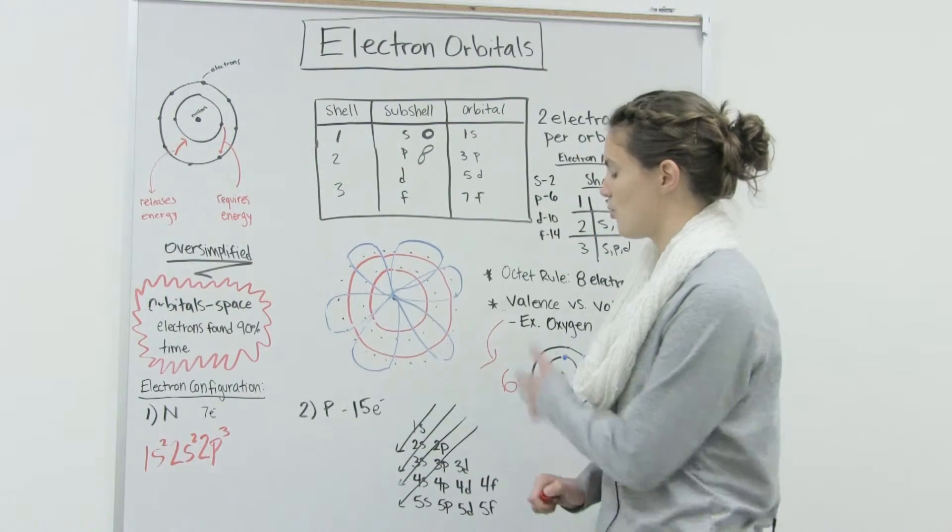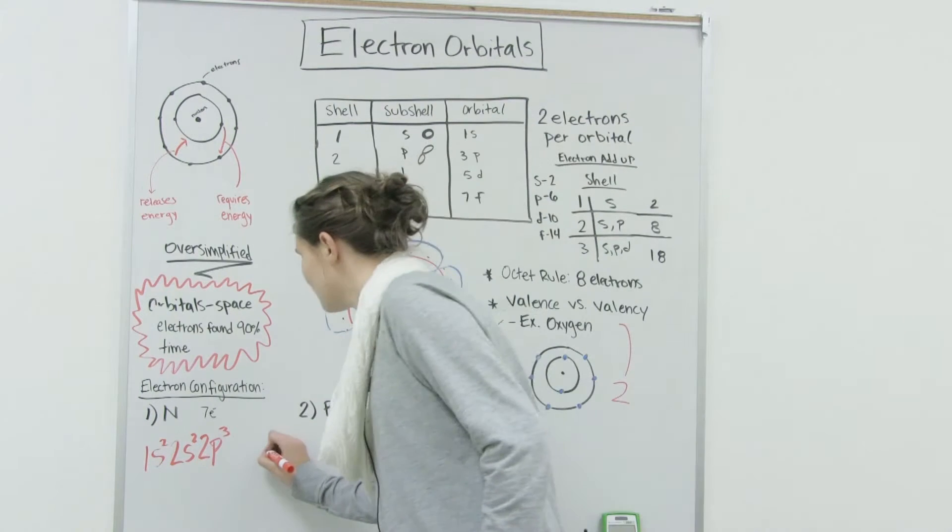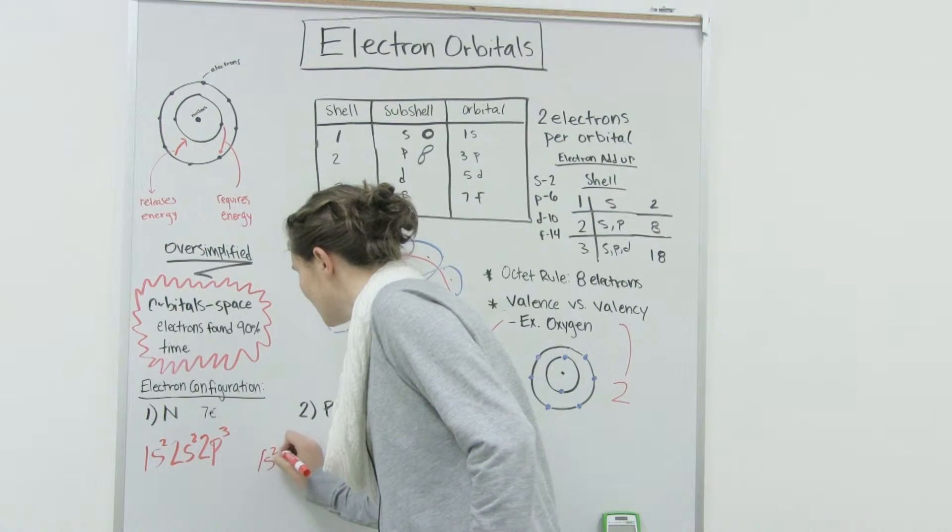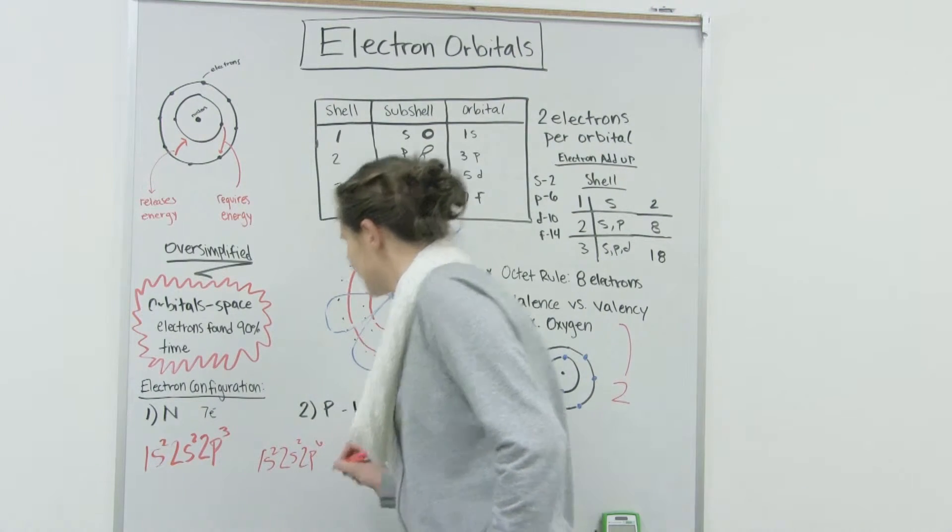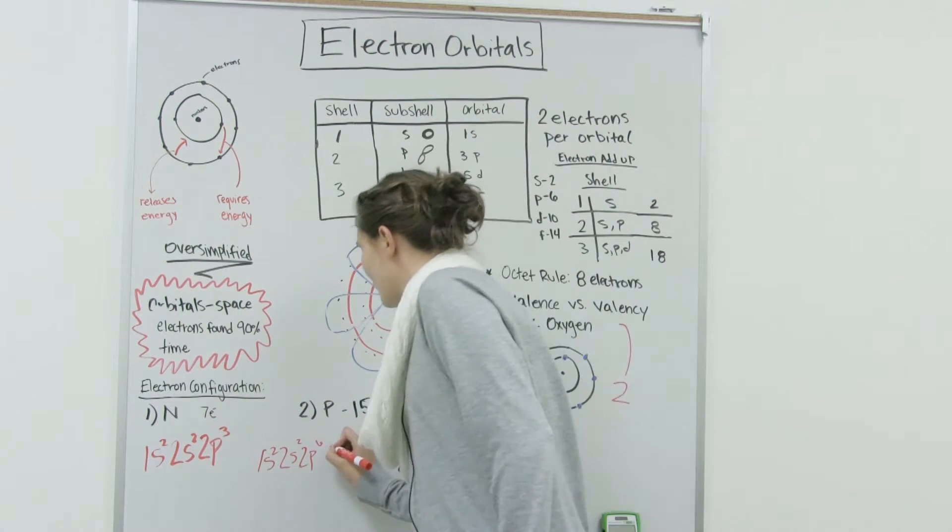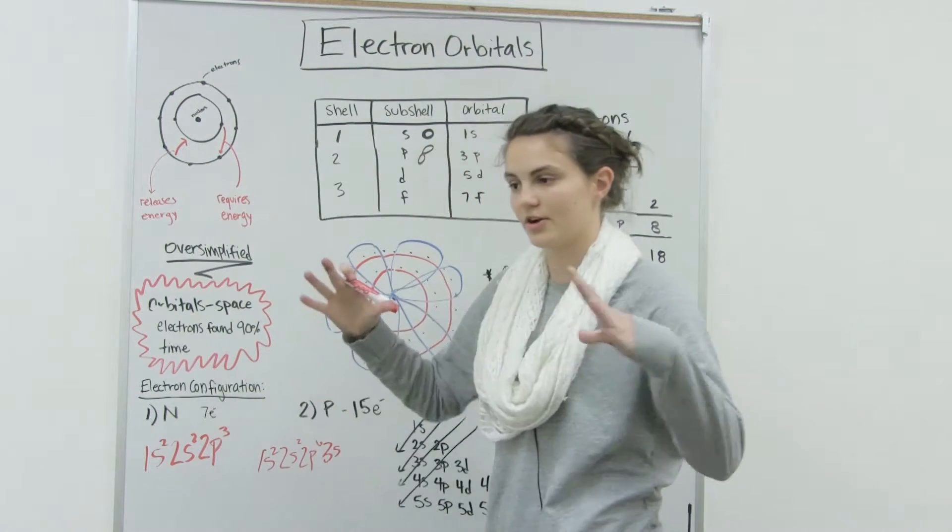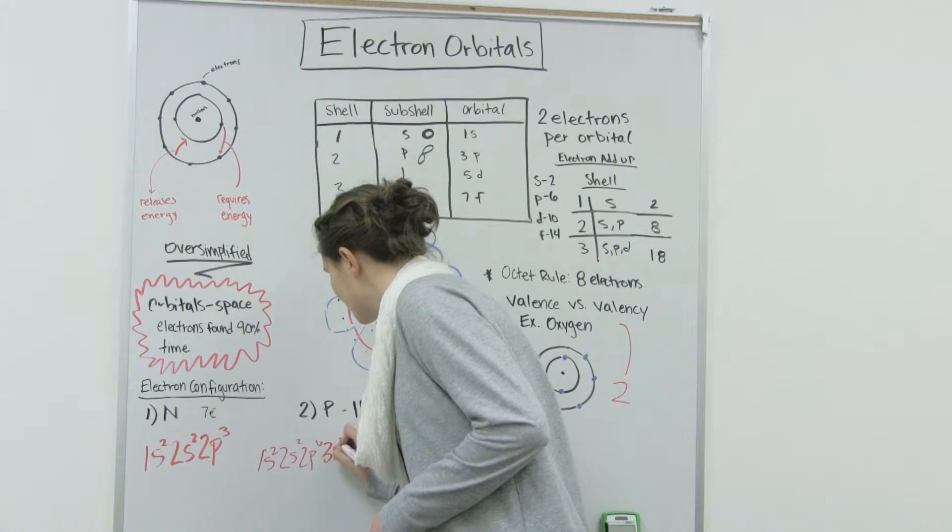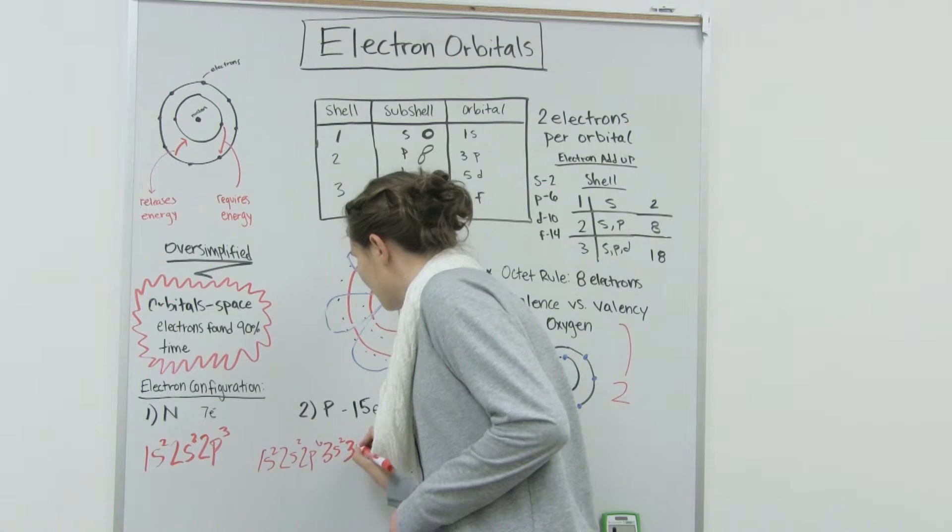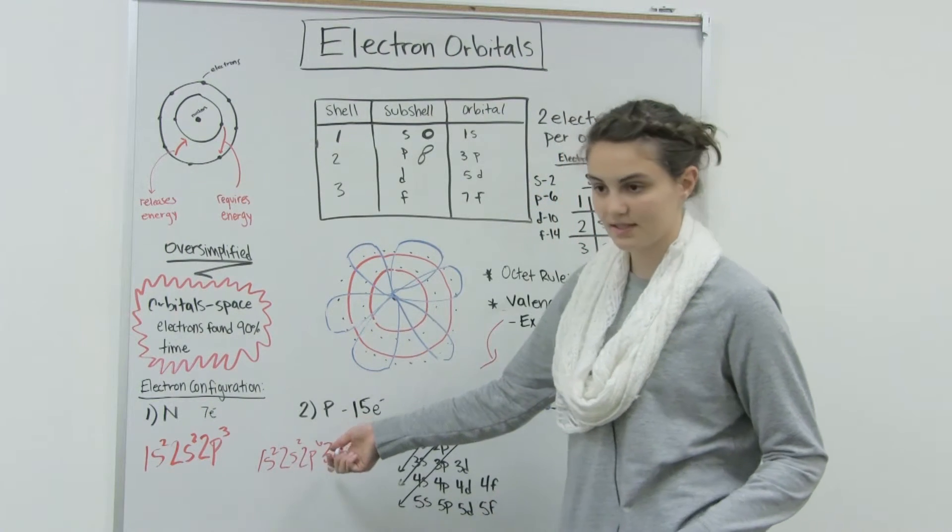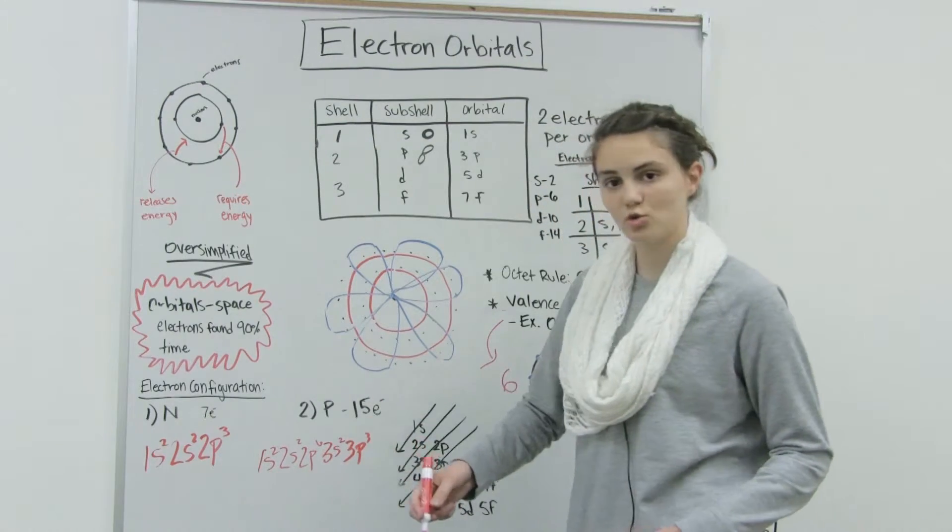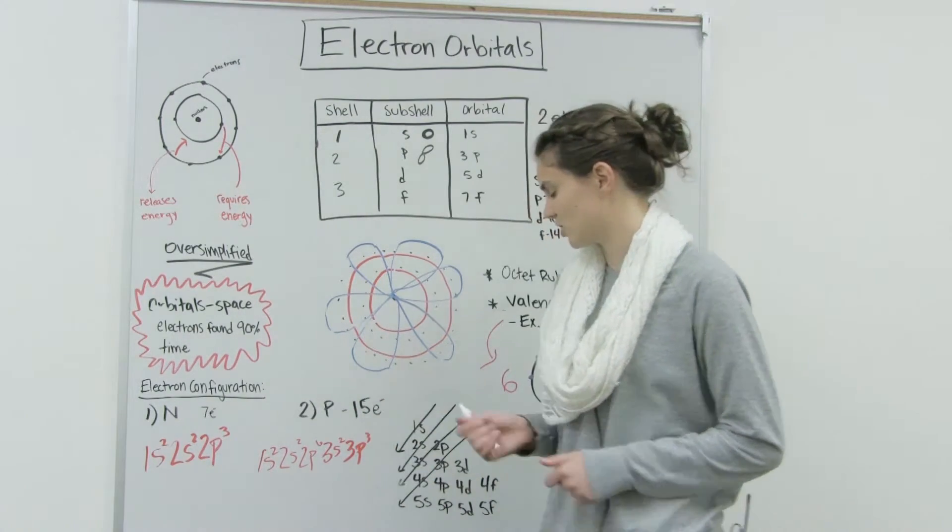Let's try another one with phosphorus. So it's going to start off the same. We're going to have 1s2, 2s2, 2p6 this time, because we have 15. Then we're going to go to 3s. We're going to go into the third shell, 3s2, and then we're going to go 3p3 because 2 plus 2 plus 6 is 10, and then plus 2 is 12, and then plus 3 is 15. That's our 15 electrons.